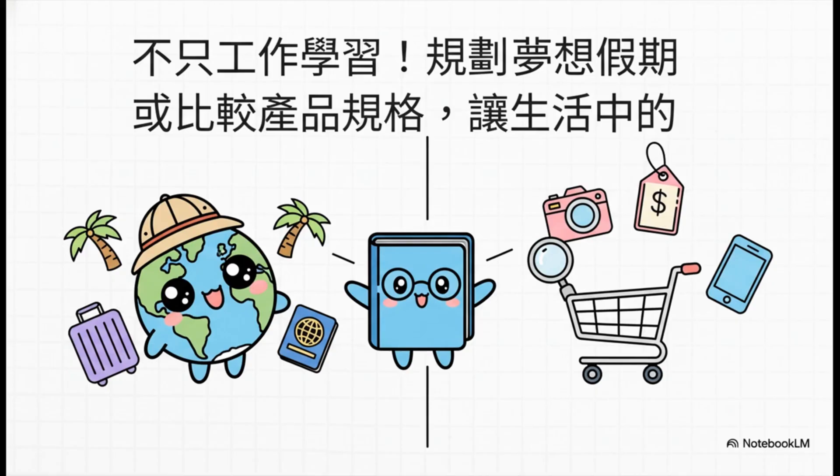而且这个功能不只能用在工作和学习上，拿来做生活规划也完全没问题。举例来说，你想规划一趟梦想中的假期，就可以把不同目的地的资料都丢进去，帮你比较景点、最适合的旅游季节，还有预估花费。或者买东西之前要做功课，也可以用它来比较不同产品的功能、价格，真的都非常方便。